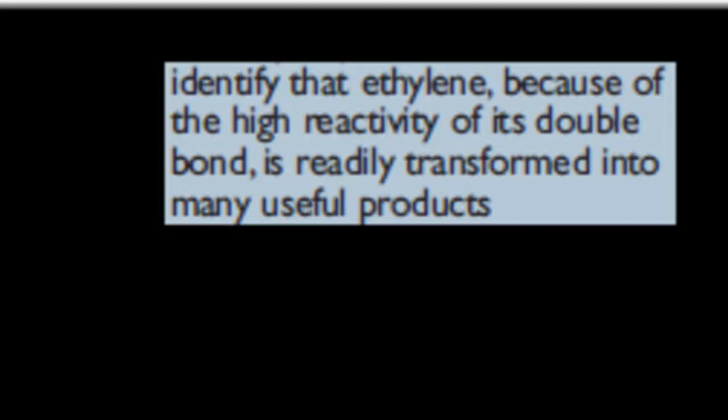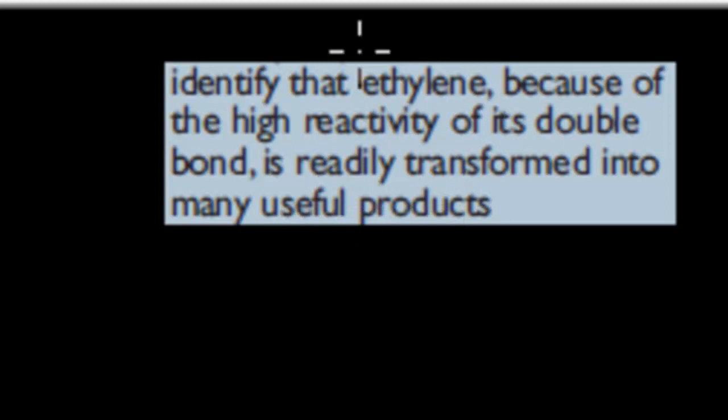Welcome back. In the last video, we talked about how we can make ethylene in terms of catalytic and thermal cracking — how we can produce ethylene from different hydrocarbons. In this video, we're actually going to cover why we need ethylene, why it's useful. The dot point says: identify that ethylene, because of its high reactivity of its double bond, is readily transformed into many useful products.